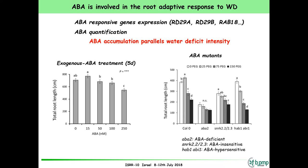We wondered whether we could mimic the root phenotype seen under water deficit by applying ABA directly. We applied different concentrations of ABA — very low concentrations, 15 to 50 nanomolar, much lower than what is usually used. Using these very low concentrations, we were able to show that we can stimulate root growth. This was also recently published by other groups — that ABA is able to promote root development. Root elongation and primordial initiation were also stimulated.